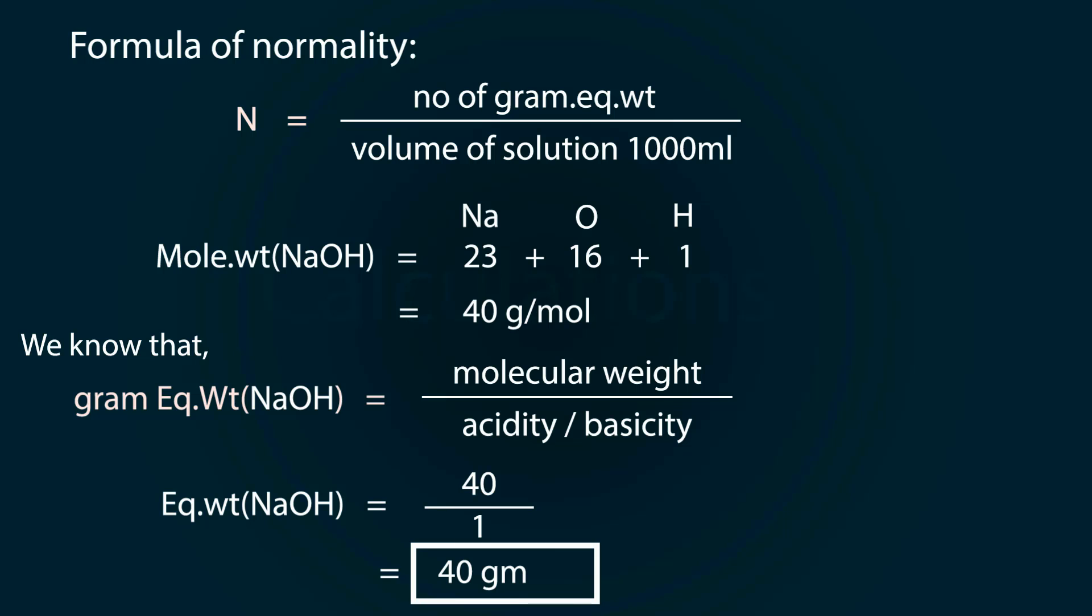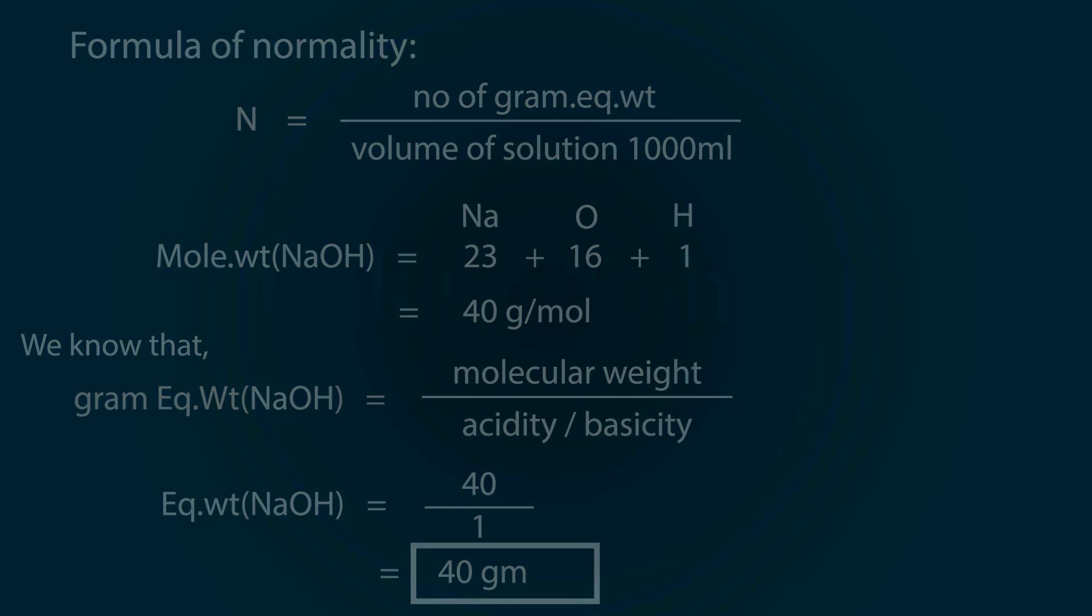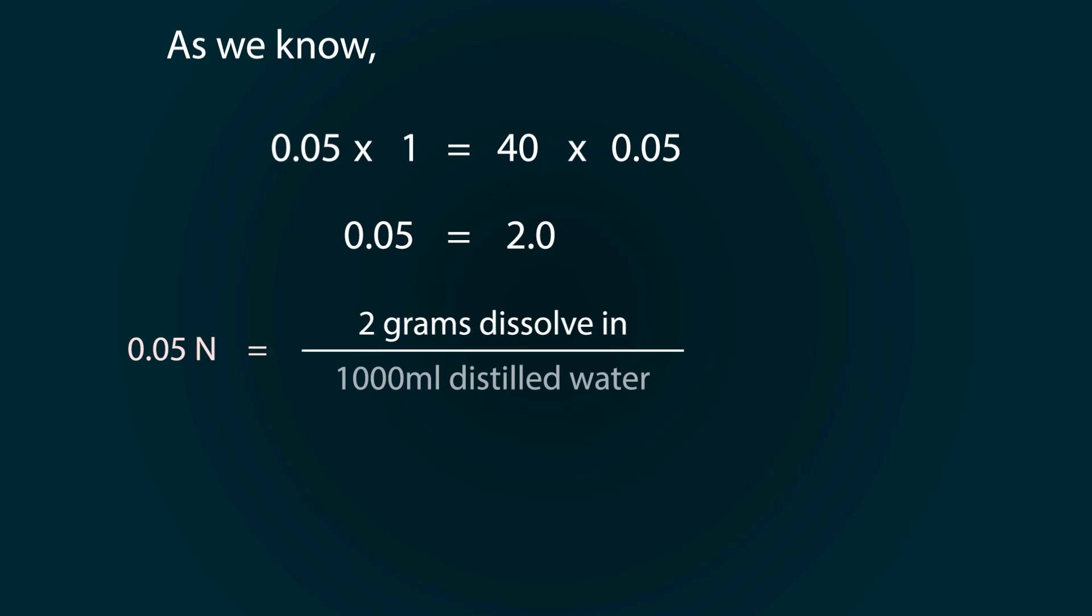So, we need to dissolve 40 grams in 1000 milliliters for one normal. But we have to make 0.05 normal. So for that, I am using the conversion factor. As we know, 40 grams for one normal. For 0.05 normal, we multiply 0.05 on both sides. We have to dissolve 2 grams of sodium hydroxide in 1000 milliliters for 0.05 normal.